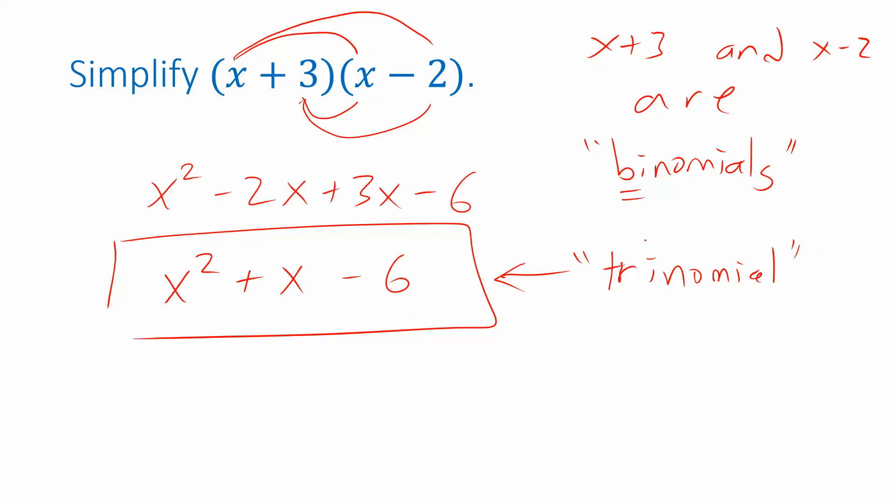Factoring is going to allow us to reverse this process of distribution, so that we could start with a trinomial and then factor it back as a product of binomials. Before we continue, let's make a couple of observations about where the coefficients in our final answer came from.